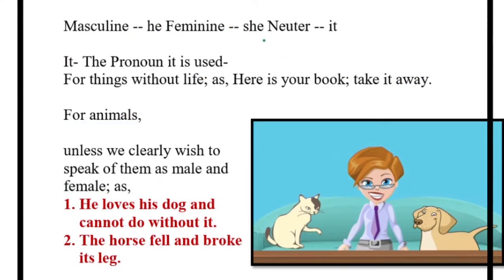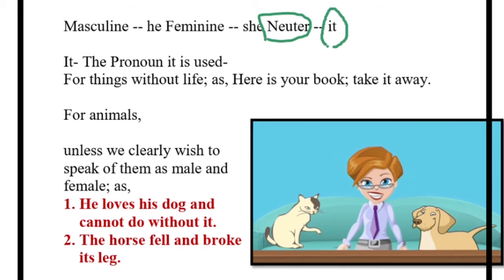Coming to the next type — we will also remember what is neuter gender. Neuter gender means when you cannot understand what the gender is, whether that person is a female or a male. If I say 'a child' — from the sentence 'I saw a child crying' — can you understand whether it is a boy child or a girl child? No. So if from the sentence you cannot understand whether the person or the animal is a boy or a girl, you will write 'it.' You will not write 'he' or 'she'; you will just write 'it.'